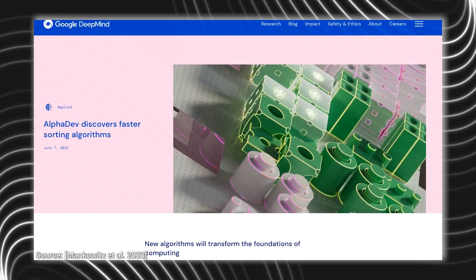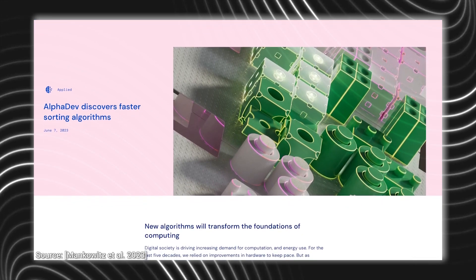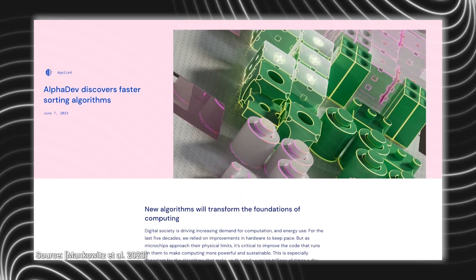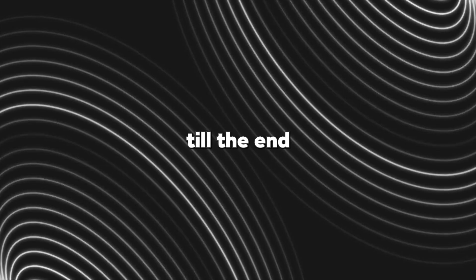On the 7th of June 2023, Google DeepMind published a blog post explaining how their AI algorithms can help solve modern-day problems. But how and what kind of problems? Keep watching till the end to find out.